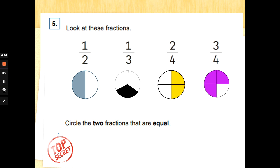It says, circle the two fractions that are equal. You know that equal means the same. Circle the two fractions that are equal. In our fraction song, we say a quarter is four equal parts and two quarters is the same as a half. If you look at a half and a quarter, the same amount of the circle has been coloured in. A half and two quarters are the same size.